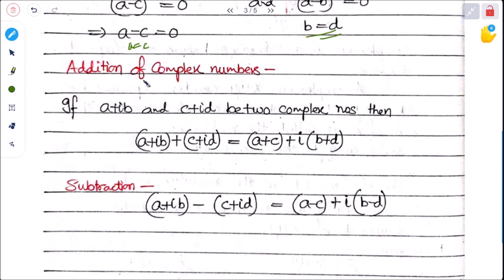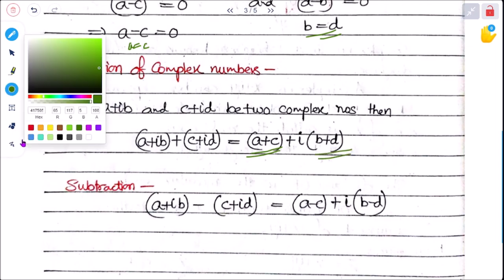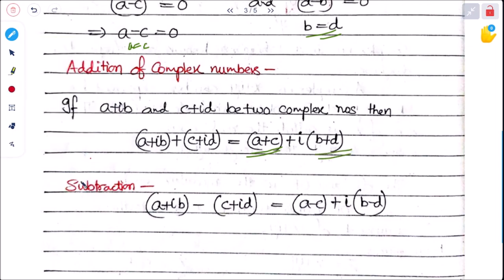Addition of two complex numbers: (a + ib) + (c + id) = (a + c) + i(b + d) — the sum of their real parts plus i times the sum of their imaginary parts. Subtraction: (a + ib) − (c + id) gives the difference of their real parts plus i times the difference of their imaginary parts.